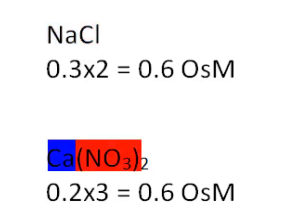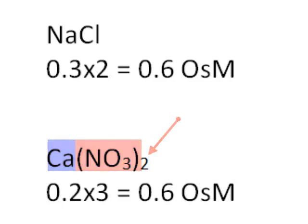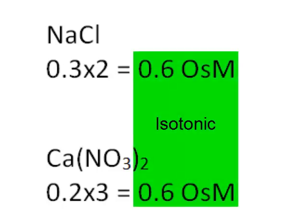For calcium nitrate, it's 0.2 molar times the three ions in the formula. There are two nitrates and one calcium, so the osmolarity is also 0.6. So these two solutions are isotonic to each other.